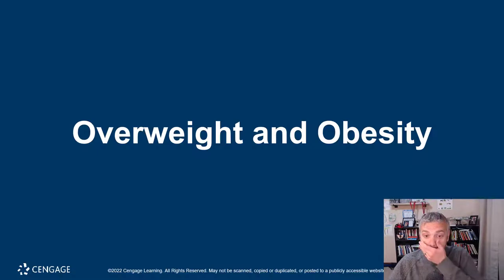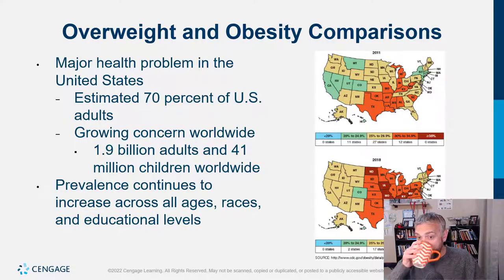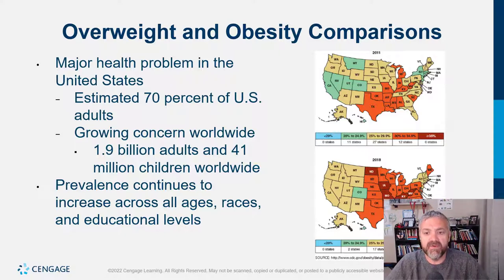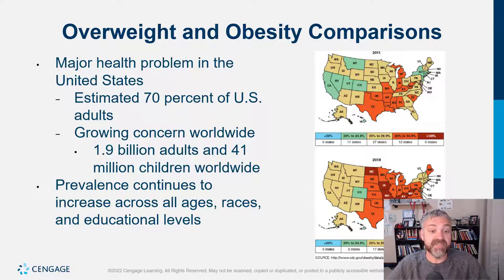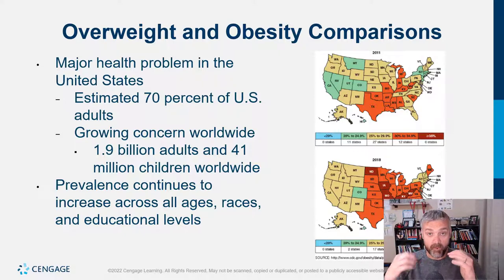Looking at a map comparing 2011 to 2018, it is now estimated that 70% of U.S. adults are overweight or obese. The Midwest and Southeast show higher percentages, but notably there are zero states where less than 20% of people are overweight or obese. This is also a growing concern worldwide — 1.9 billion adults and 41 million children worldwide are overweight or obese. We've now reached a point where more people are overweight and obese than are malnourished and underweight.